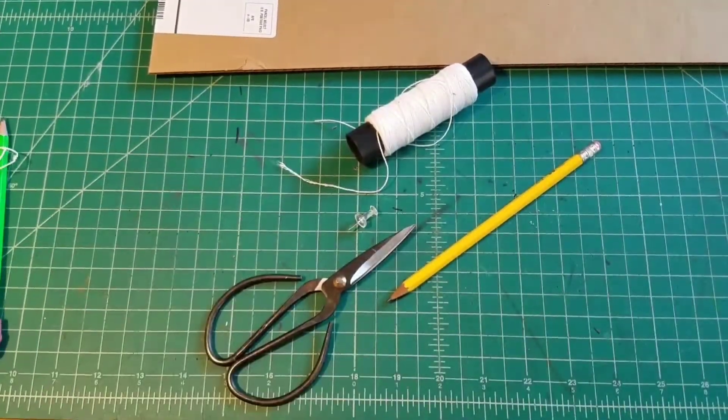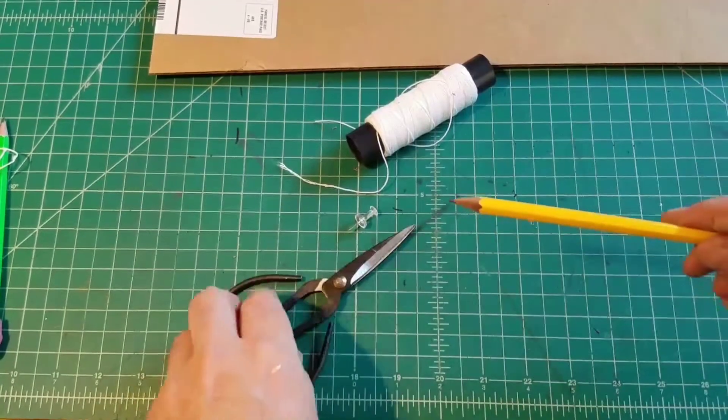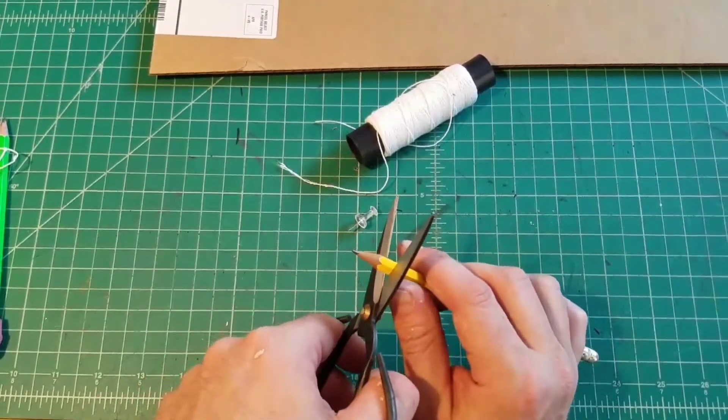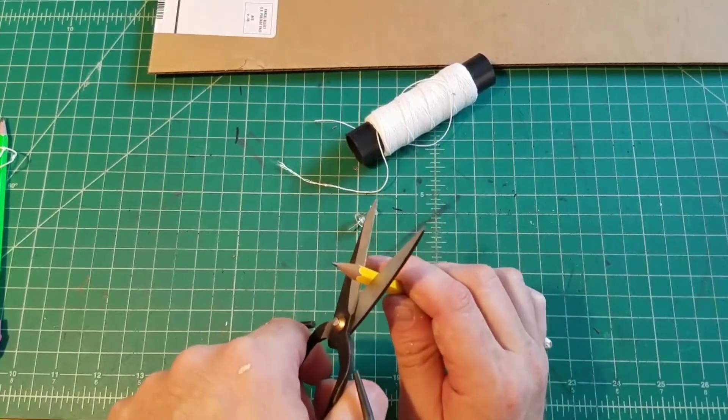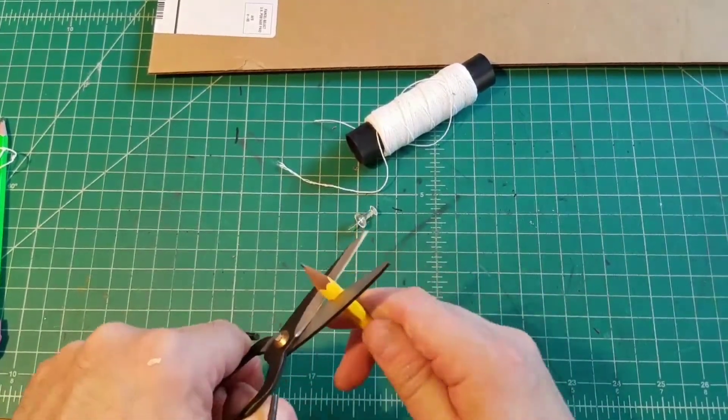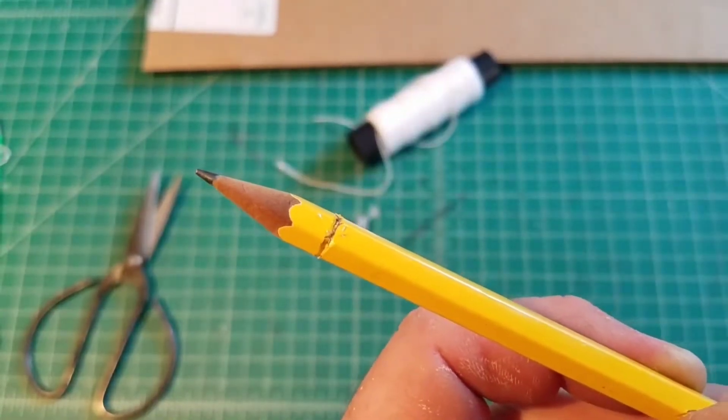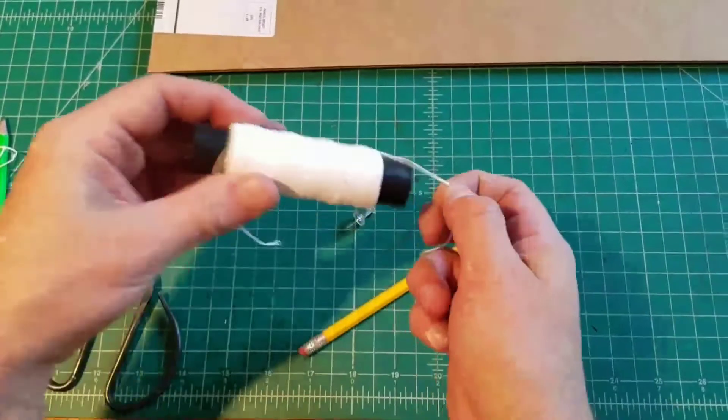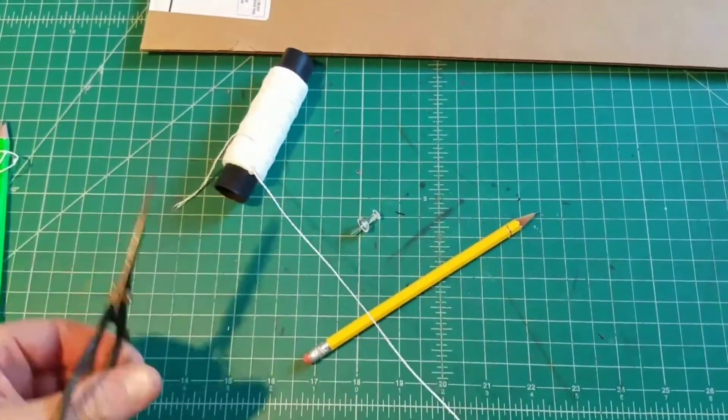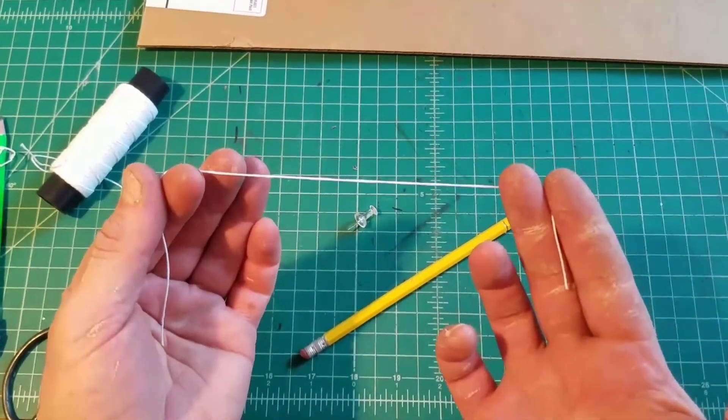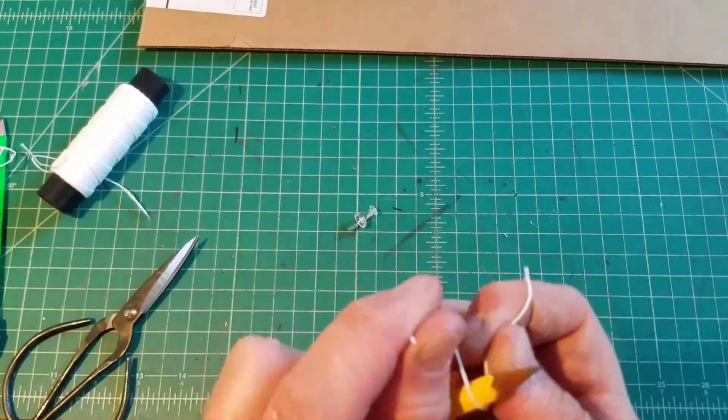The first thing you're going to want to do is take your pencil. Make sure it's sharp in advance. Then you're going to go down toward the end of the pencil with your scissors. You're not chopping it off. You're just closing the scissors as you spin, and you're creating a divot in the pencil. Next, you're going to take your string. Cut yourself maybe 10 inches. You don't need a ton. In fact, you don't want a ton. Tie the string around the pencil.